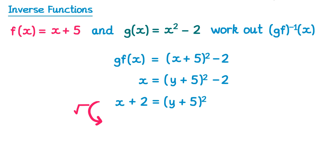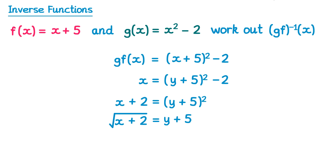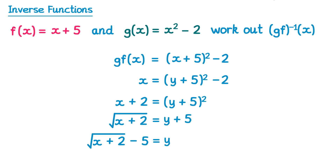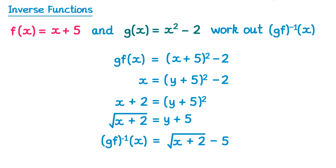Swap y's and x's, then rearrange to make y the subject. Add 2 to both sides: on the left it's x + 2, and on the right that cancels the −2, leaving (y + 5)². Square root both sides: on the left we get √(x + 2), and on the right we get y + 5 — no plus or minus needed. Subtract 5 from both sides: on the left it's √(x + 2) − 5, and on the right the 5 cancels to give just y. Replace y with the inverse of gf, giving gf⁻¹(x) = √(x + 2) − 5.